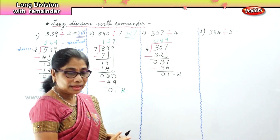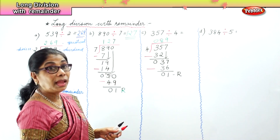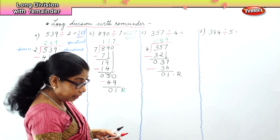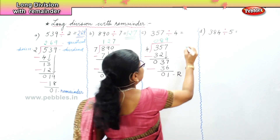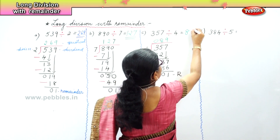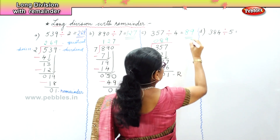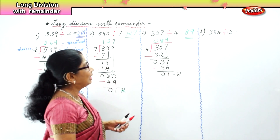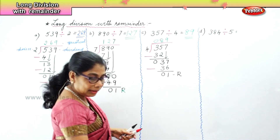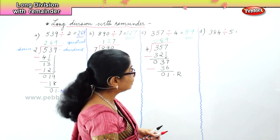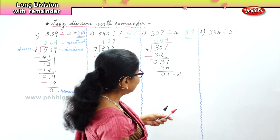The answer is 89 remainder 1. That's your answer. Now finally let's do the last sum.